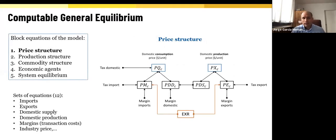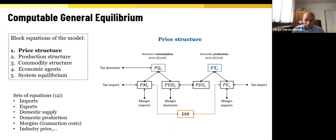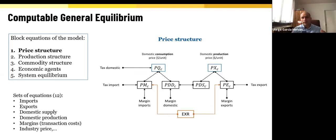Moving on to the actual CGE model, we have five blocks of equations. The first block covers prices, specifying relationships between different prices in the model: consumer prices, producer prices, import prices, and export prices. We also specify taxes paid by different consumers and the margins, which are the transaction costs. In all, this block has 12 sets of equations.